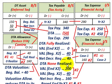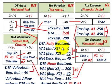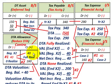Deferred tax asset — none realized. When working with this, just take whatever your ending valuation amount needs to be, compare it to the beginning amount in your valuation account, and determine whether you need a net increase or decrease. Adjust that deferred tax asset account appropriately.